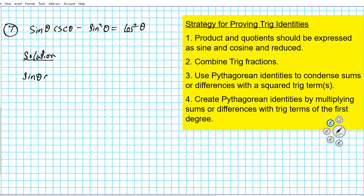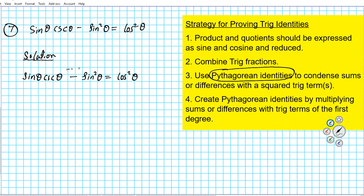If you direct your attention to the yellow box to the right you're going to see the strategy that we've been implementing from number one to six for these fundamental identity problems — we're going to be using it for this problem also. If you take a look at the left side of the equation you'll notice that we have an operation, namely minus, and the square of a trig function, sine. Anytime you have the sum or difference of squares of trig functions, always think about Pythagorean identities.